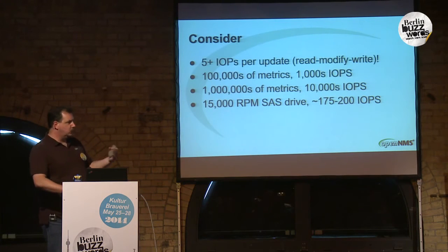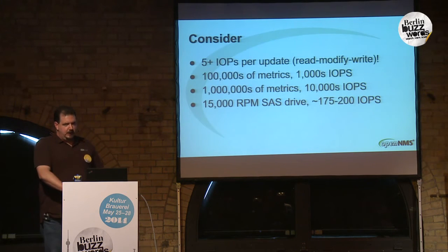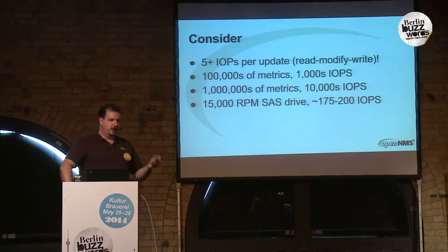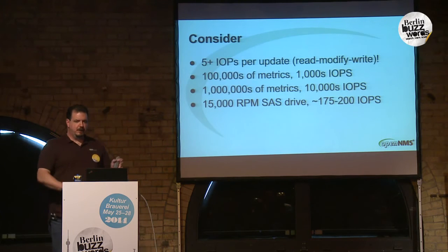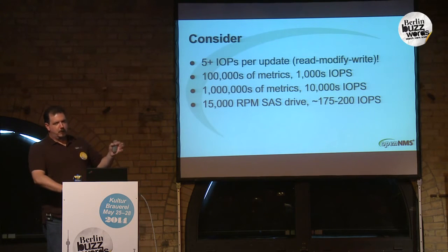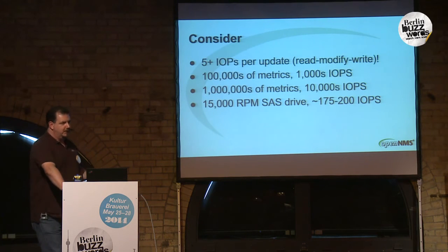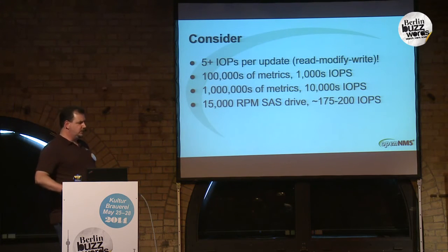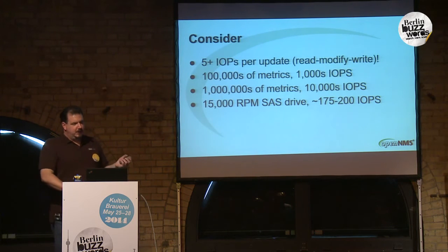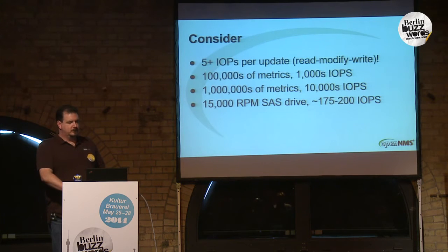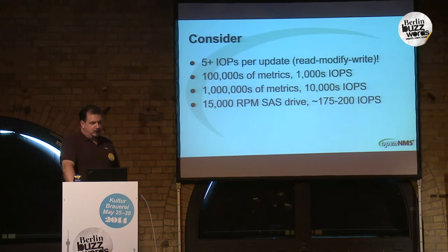There is an ugly downside, and that is the I/O involved. This is a read-modify-write. Each update of an RRD involves reading and writing file-based metadata and per-metric metadata, and of course the actual values themselves. At a minimum, you get five IOPs just to update a single metric. So if you have hundreds of thousands or millions of metrics, that's going to be thousands or tens of thousands of IOPs even at a rather long sample interval of five minutes.